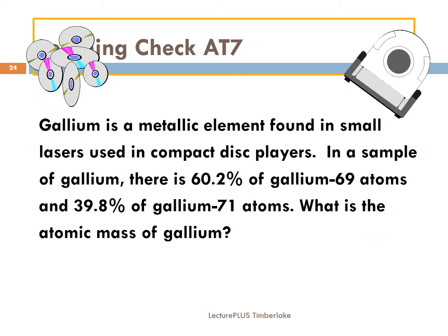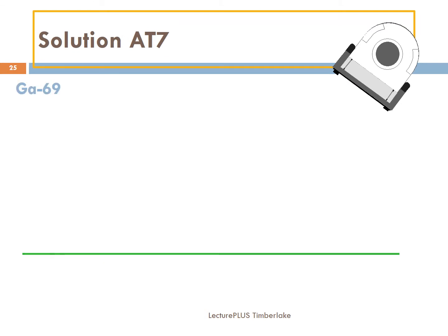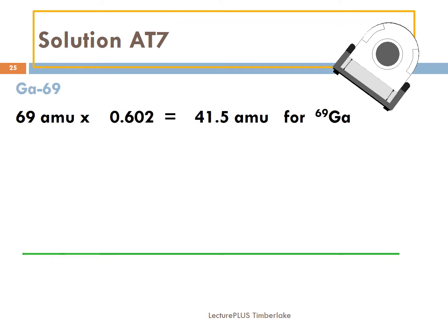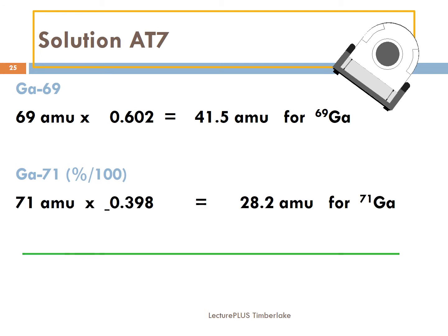Gallium is a metallic element found in small lasers. You have samples of gallium-69 at 60.2% and gallium-71 at 39.8%. What's the atomic mass of gallium? You have two isotopes. Gallium-69 multiplied by 0.602 gives you 41.5. Gallium-71 multiplied by 0.398 gives you 28.2. You add 41.5 and 28.2 and you get 69.7 AMUs.